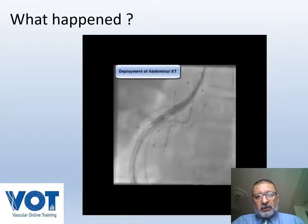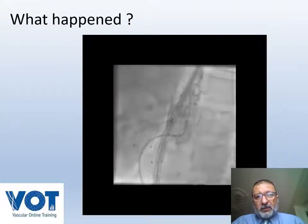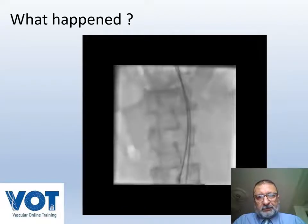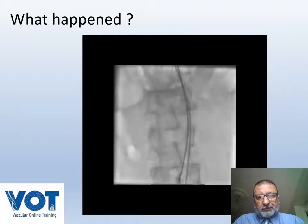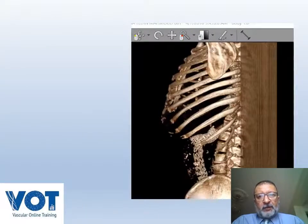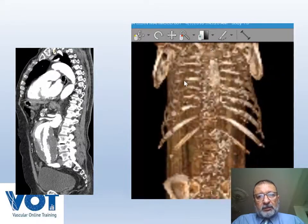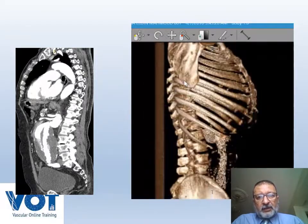Here is the introduction of the EVAR device inside the pre-deployed self-expandable stent using our technique, and this is the picture before full deployment. After one-month follow-up, you can see a patent endograft with a small amount of type 2 endoleak into the sac. This was the one-month follow-up result.